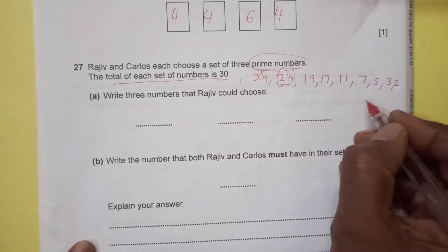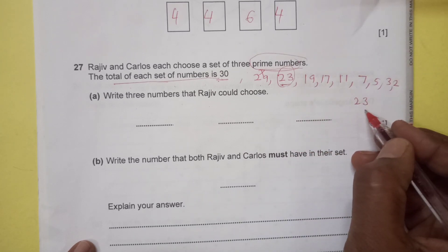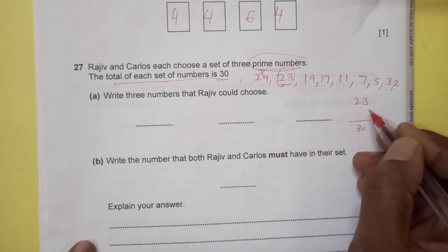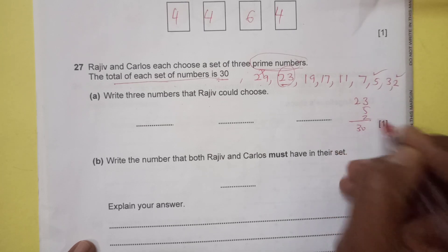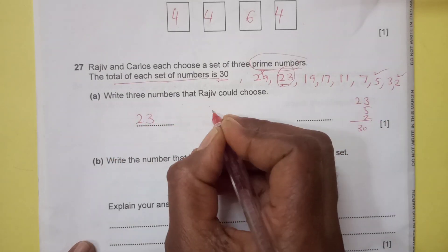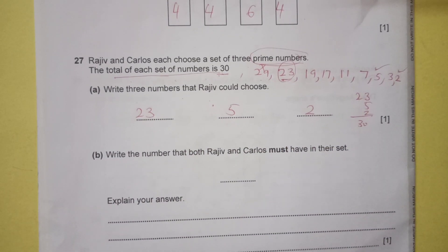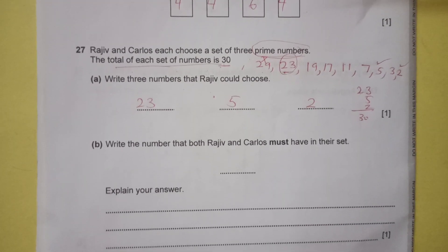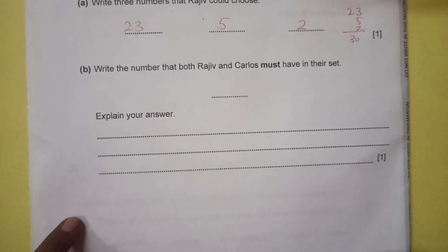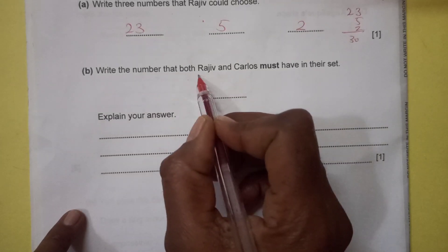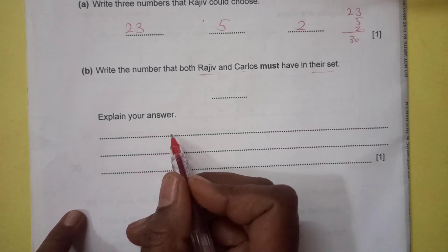We can choose, if we can't take 29 because then there is only one left here. If we choose 23, then we can add one number that makes 30. That means two numbers, 23 plus 7. Plus 7 means we can choose 5 and 2. So 23, 5 and 2 will make the total of 30. Write the number that both Rajiv and Carlos must have in their set. Explain your answer.